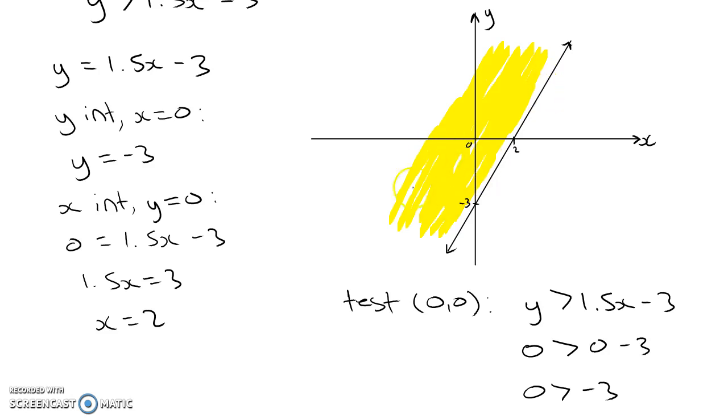Anything on this side of the line does satisfy the inequality, but any points that are actually on this line, for example this coordinate 2, 0, does not satisfy that inequality. And to represent that, we actually make our line dashed. So I'll just rub out along this line here to indicate that the coordinates on that line do not satisfy the inequality.